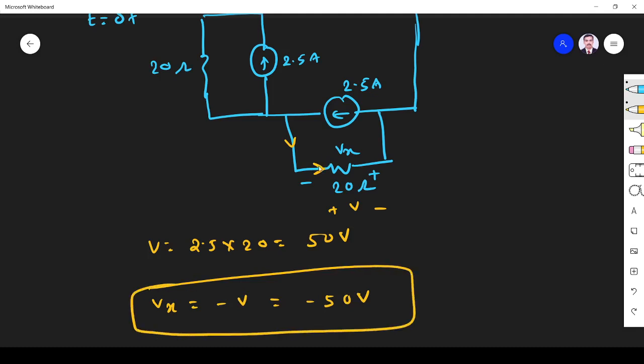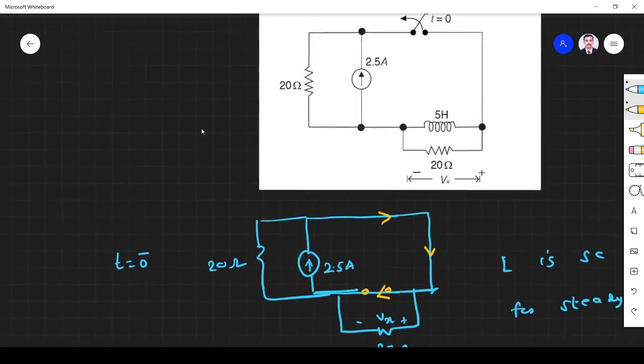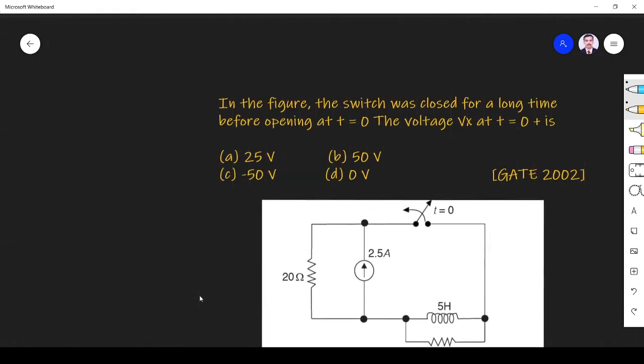So current flows from higher potential to lower potential. So plus minus. So it is 50 volt. Vx is given like this: minus here, plus here. So opposite sign. So Vx equals minus 50 volt. So which option matches for this? Option C matches for this. That is that. Thank you.